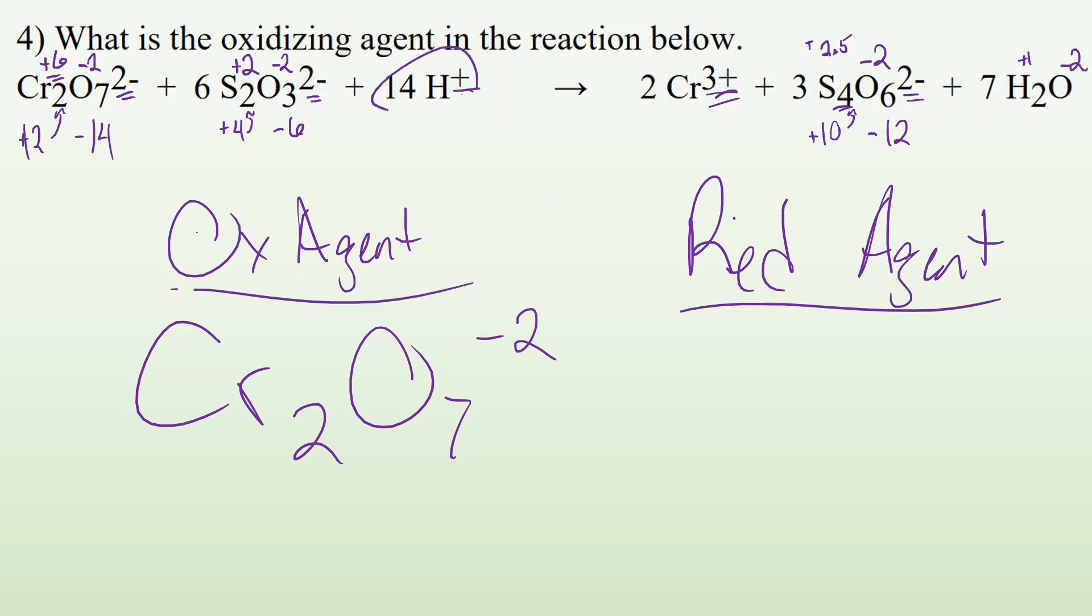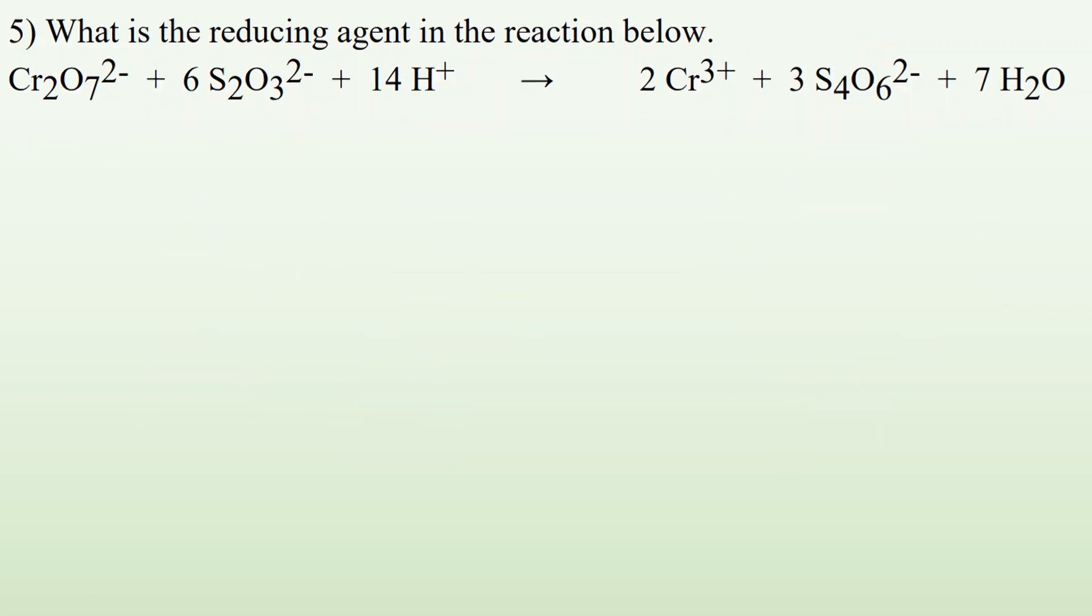Hydrogen's not changing at all, so it can't be that. It must be this S2O3 minus two. Some of those sulfurs are getting oxidized. They went from a plus two to a plus three, right? Probably only two of them. Two of them stay the same. That's how you end up with a two and a half as the average oxidation number.